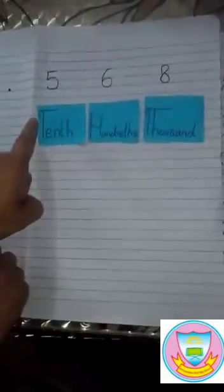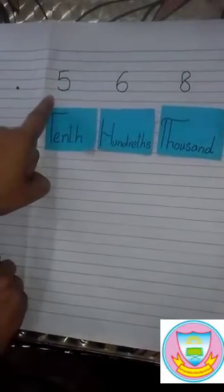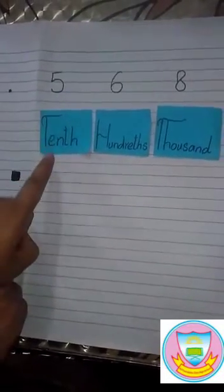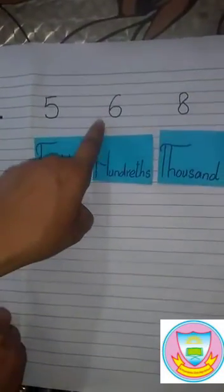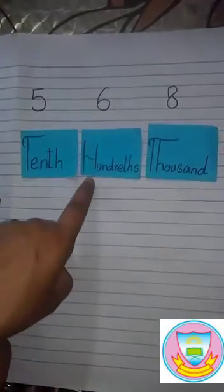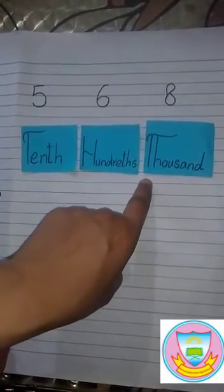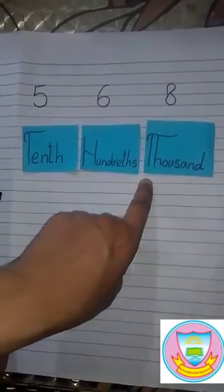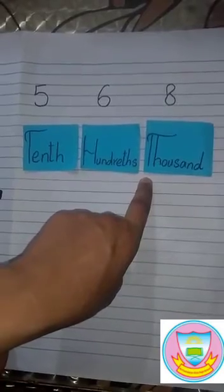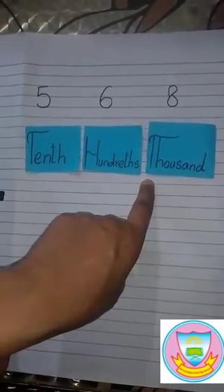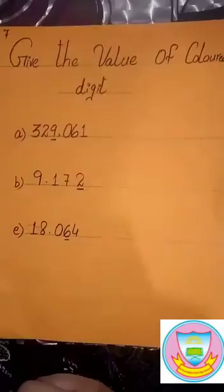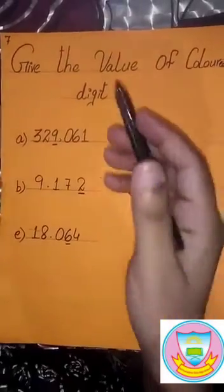Now we learn the values after the decimal. After the decimal, the first value is in tenths. The second value is in hundredths. And the third value is in thousandths. I hope you understand the place value chart.